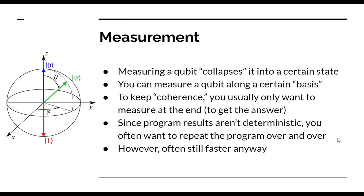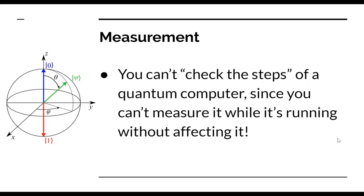Because program results aren't deterministic — quantum mechanics doesn't completely determine the future unambiguously — you often want to repeat the program over and over to be sure of the answer. However, even accounting for that, quantum computers are often faster than classical computers at least from a theoretical perspective. You cannot check the steps of a quantum computer because measuring it while it's running will mess it up. Fortunately, many of the problems we'd like to solve are questions easy to check but hard to find — like RSA.